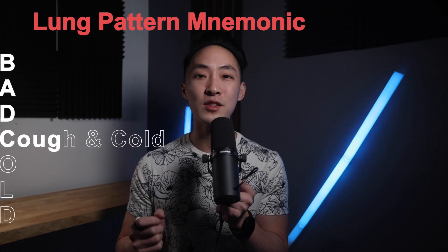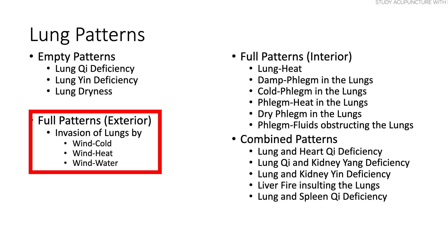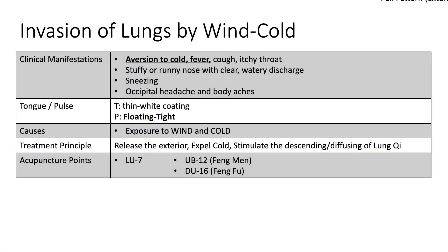Now the next letter in BAD COLD is C. C has to do with cough and cold. This comes from the full patterns section — the ones that are of an exterior origin. Basically there's invasion of the lungs by different EPFs like wind cold, wind heat, and wind water. With wind cold and wind heat, you're going to get exterior manifestations like aversion to cold — so the C is for cold — and you'll also get cough. So C stands for cough and cold in these exterior invasion full patterns.